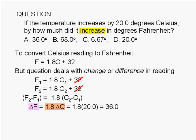When converting temperature changes from Celsius to Fahrenheit, we multiply the change on the Celsius scale, but we do not add 32.